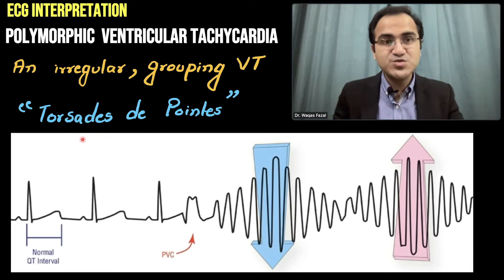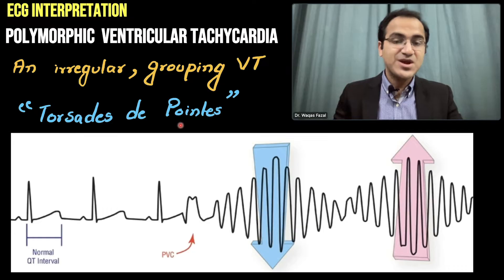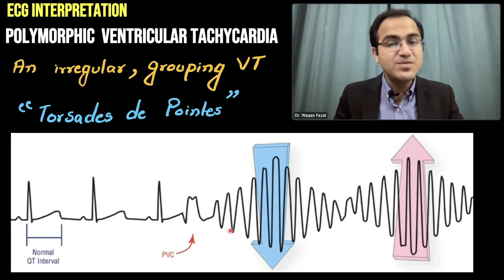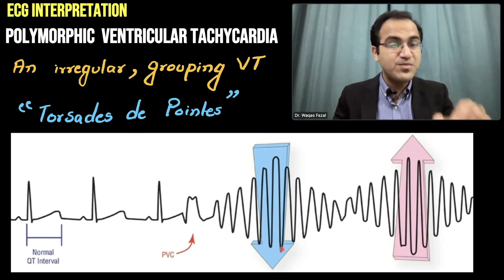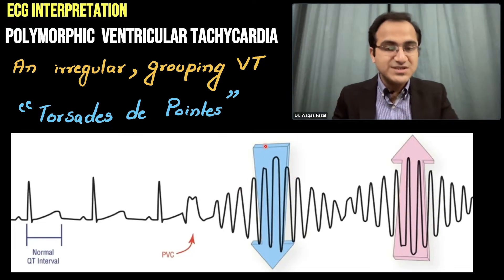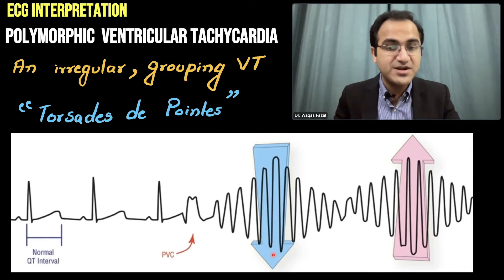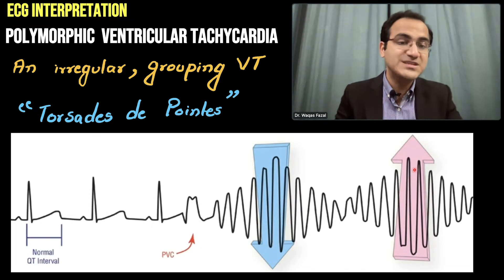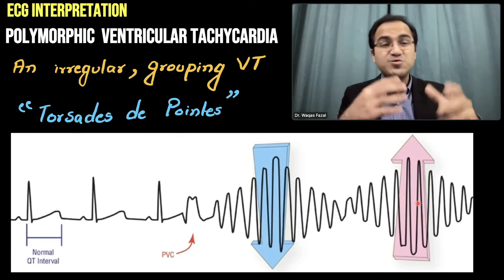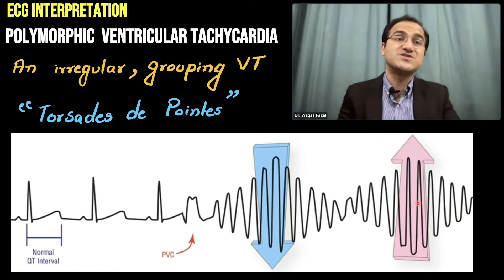Torsades de pointes is a French word that means 'twisting of the points.' In this type of arrhythmia, on one side the QRS complexes are pointed, and on the other side they are round. The points are directed downward in one part, then those same points twist to be directed upward in another part, while the other end is rounded. That twisting around the points is torsades de pointes.